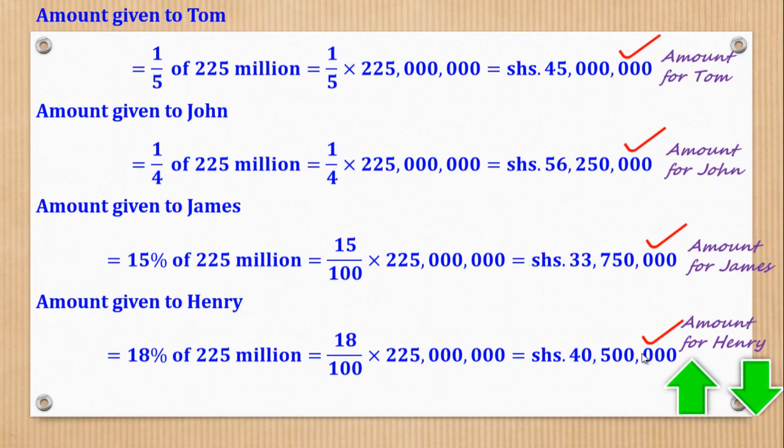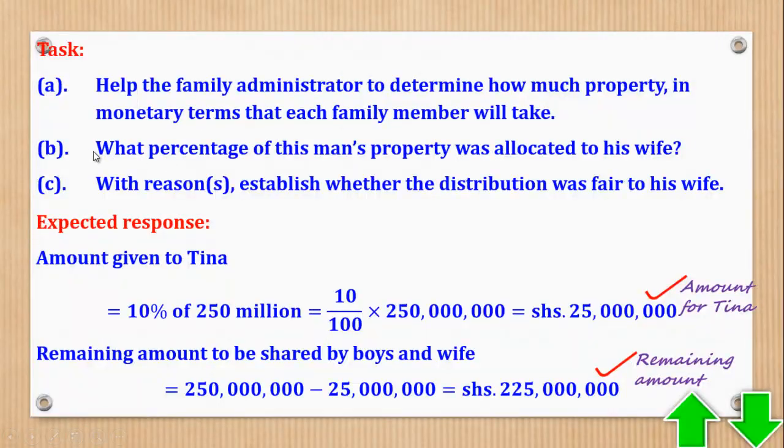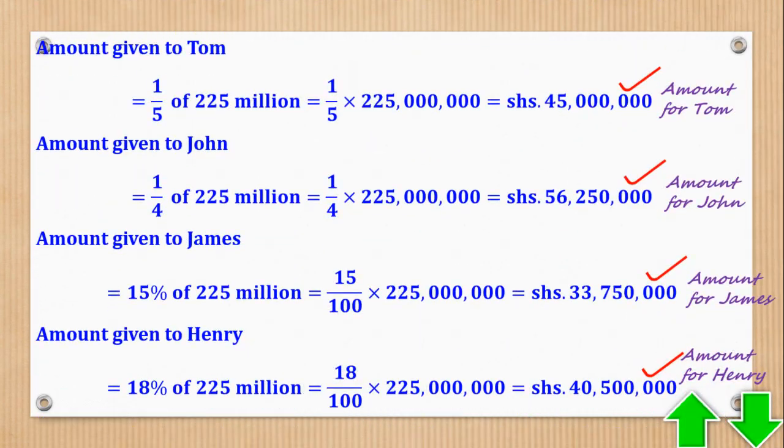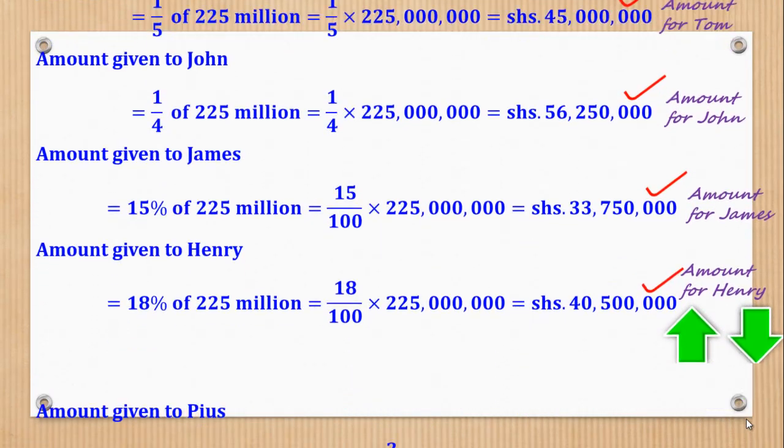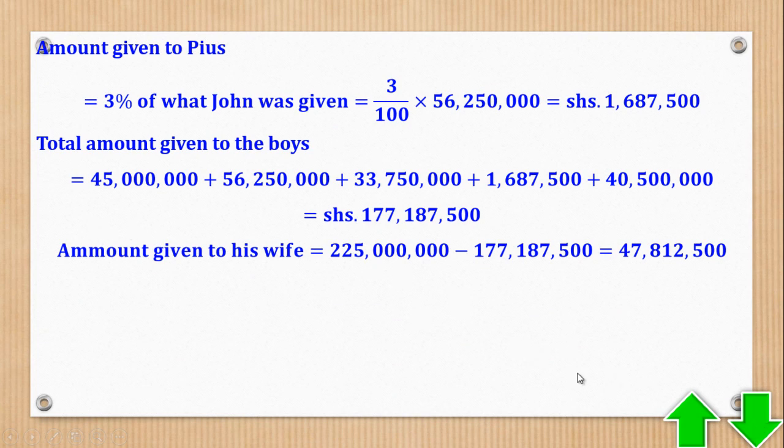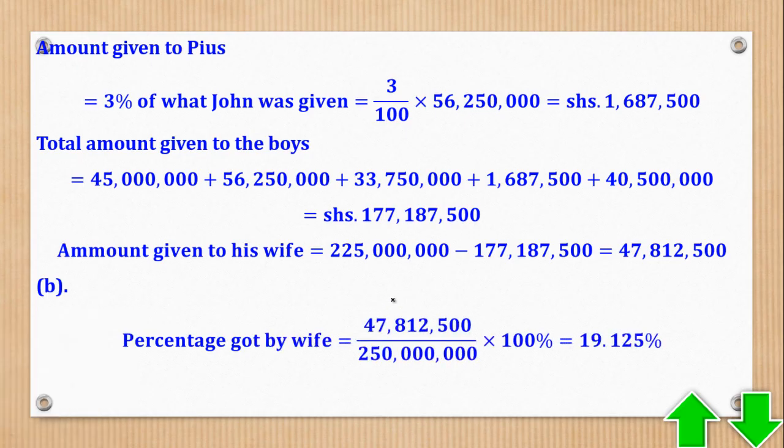Now we can go to task B. Task B says: what percentage of this man's property was allocated to his wife? So percentage, remember percentage is part of a whole, expressed as a hundred. So we shall get the amount given to the wife, over the total of the man's property, times a hundred, which gives you 19.125%.